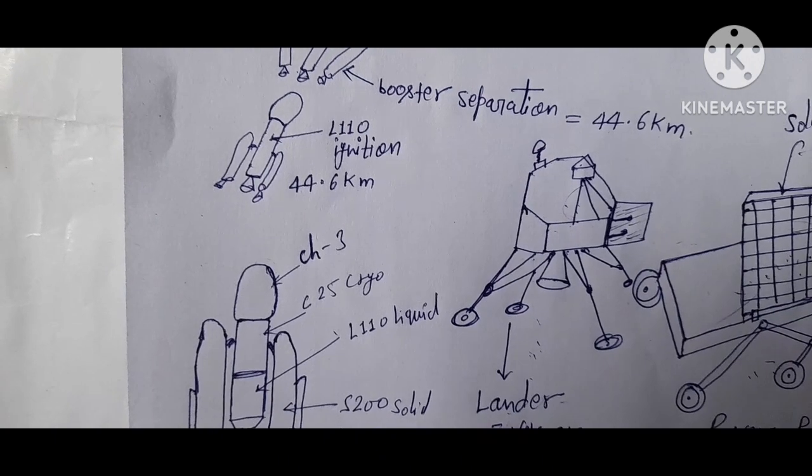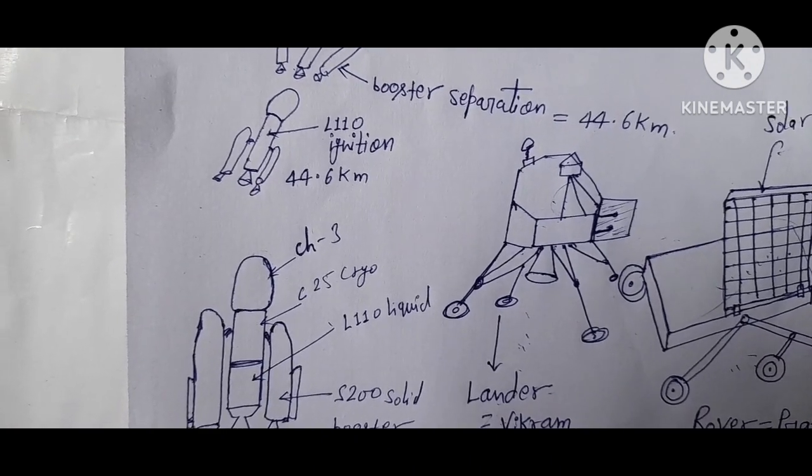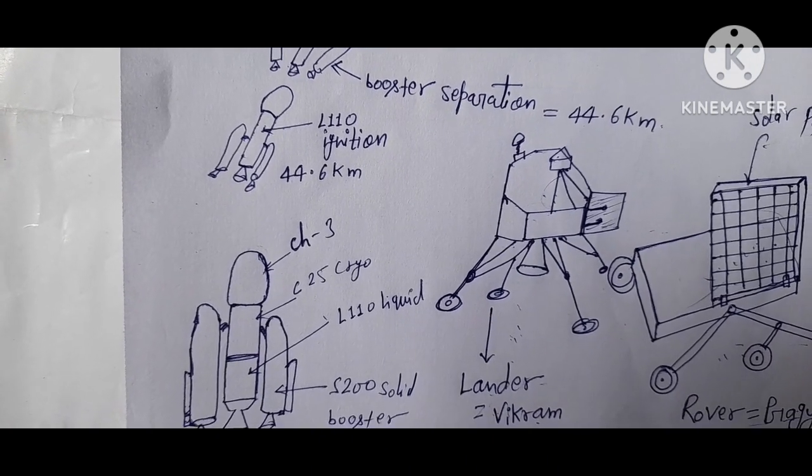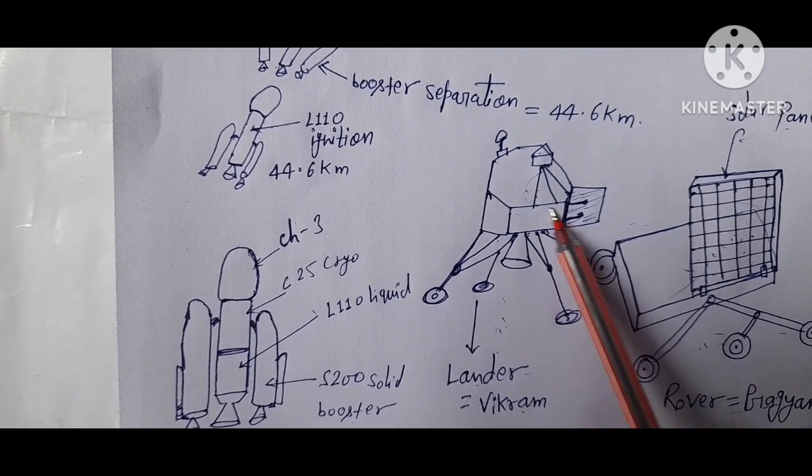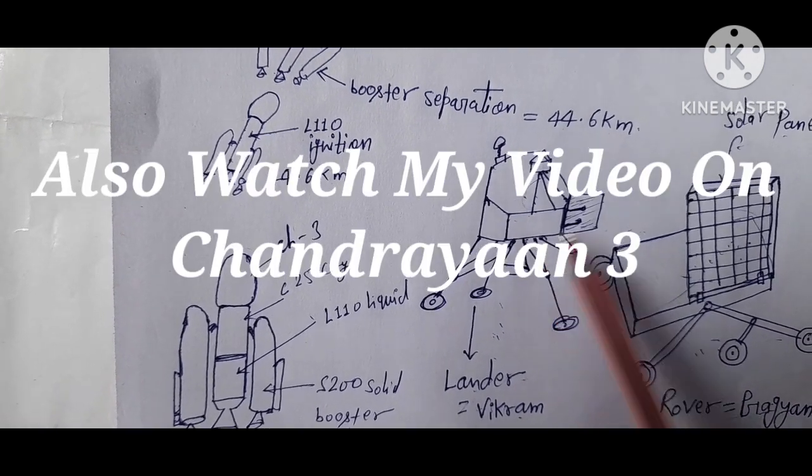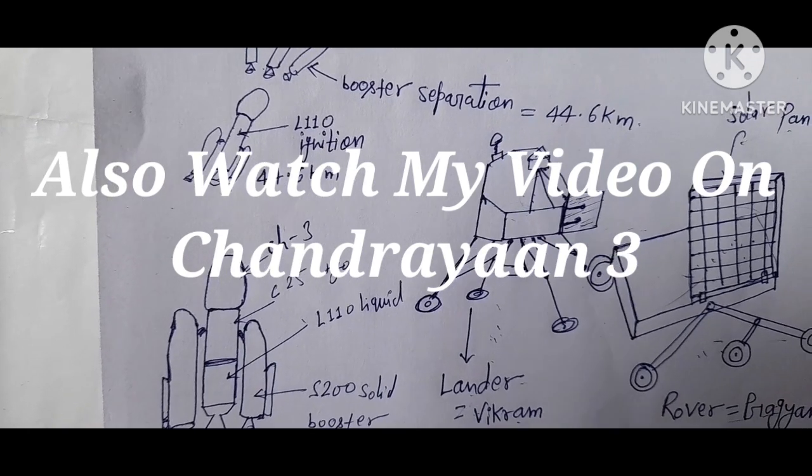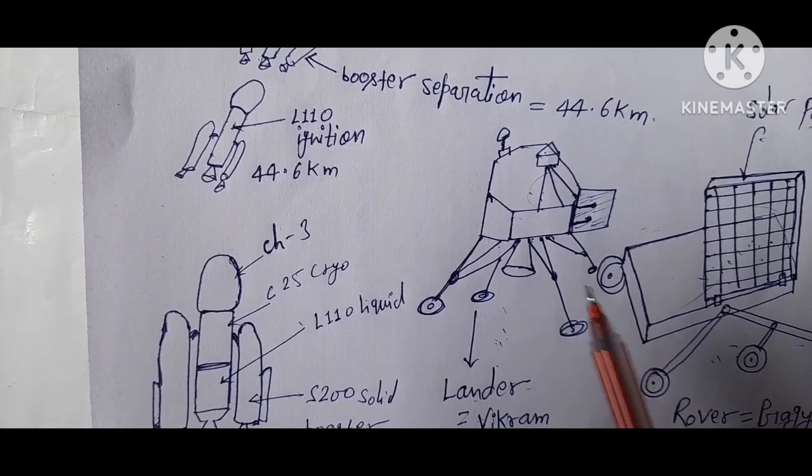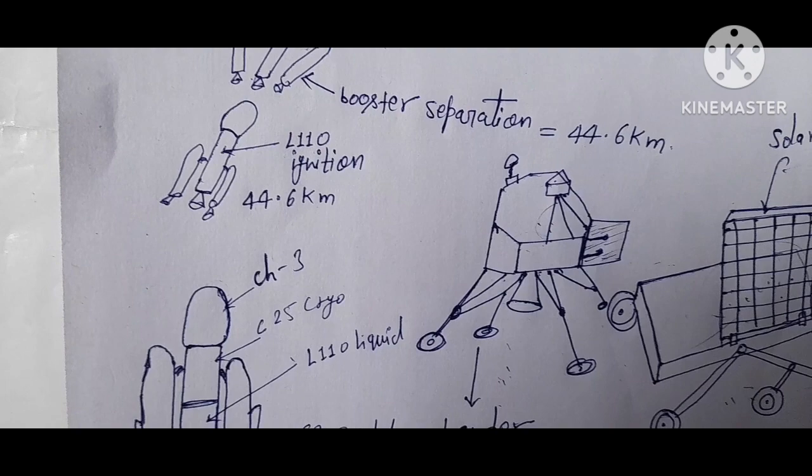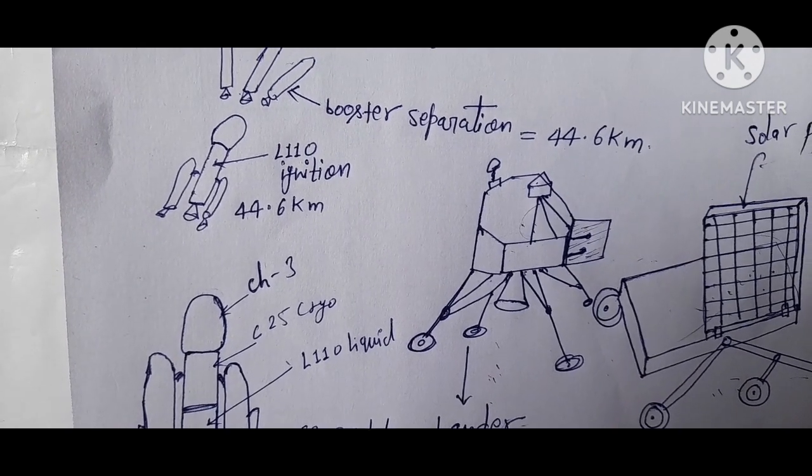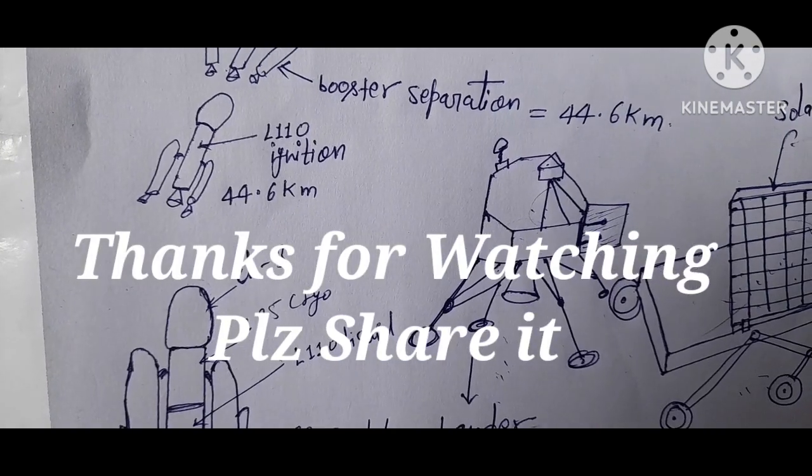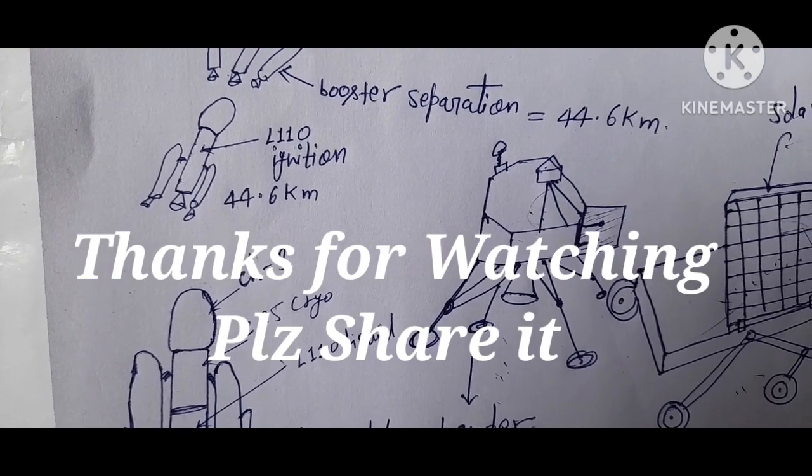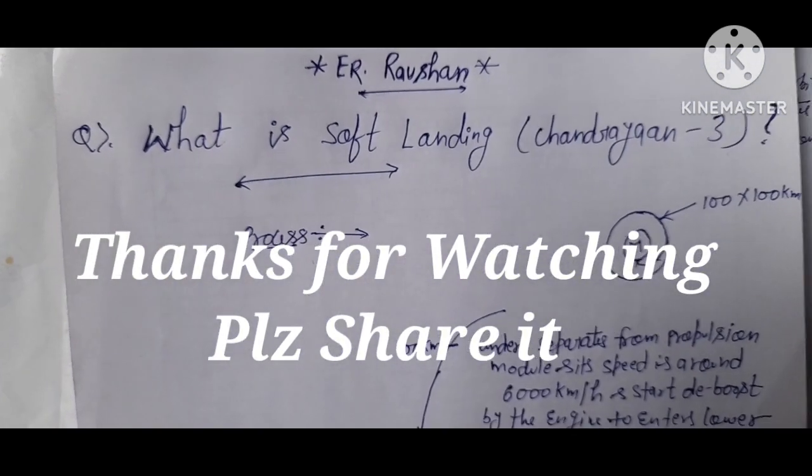The ISRO chief says that if everything fails, two thrusters will always work and it will be possible to land on the moon surface. This is a statement by the ISRO chief. Thank you for watching this video.